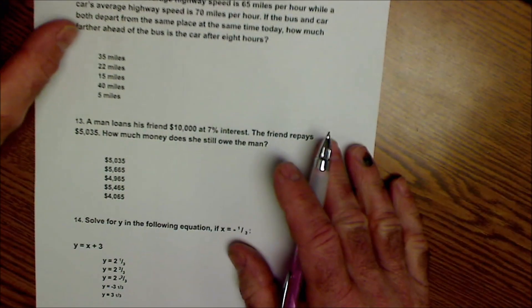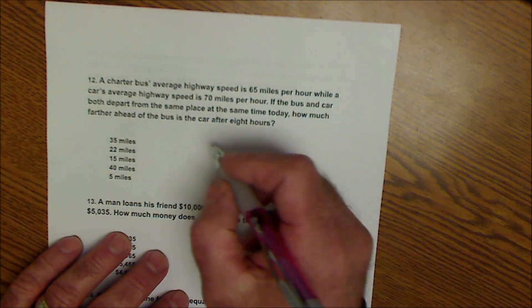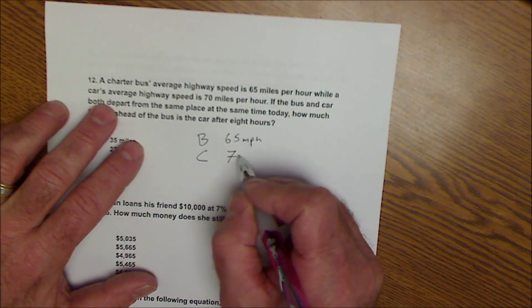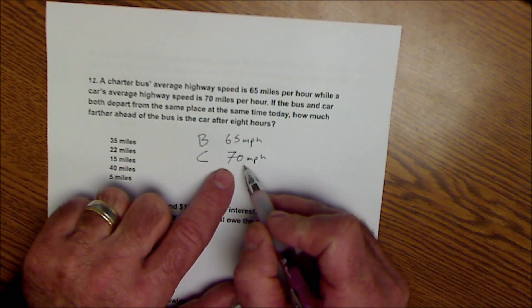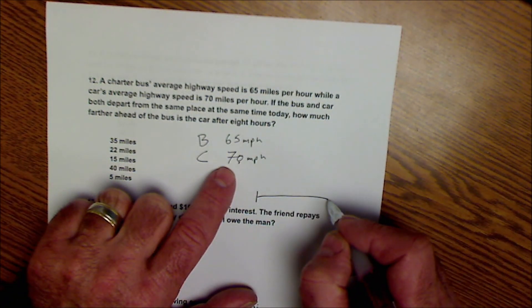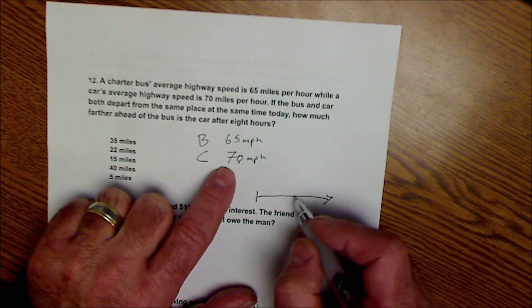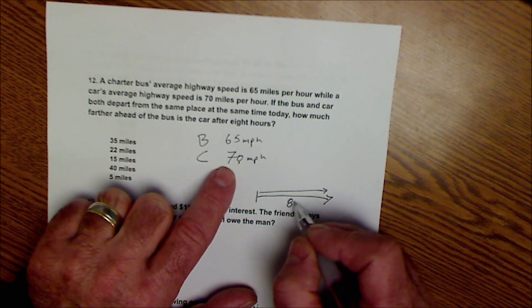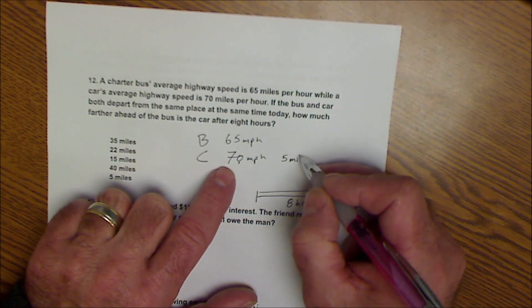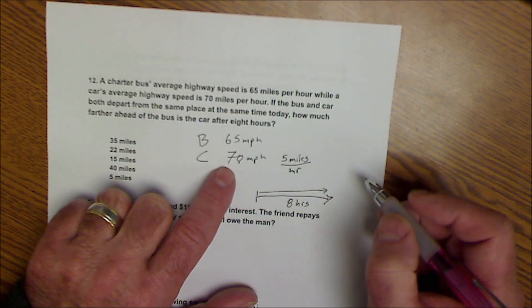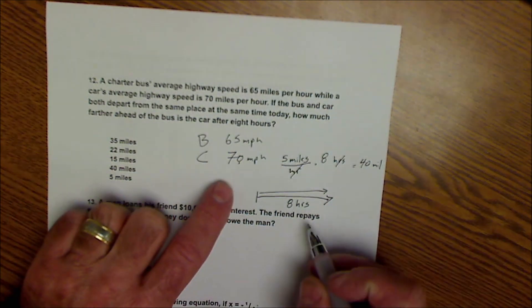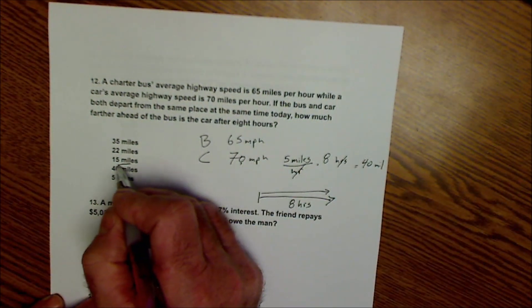All right, turning the page here to number 12. A charter bus, so I have a bus, is 65 miles per hour. While a car's average speed is 70 miles per hour. So that means every hour this car does 5 more miles. If the bus and car depart from the same place at the same time, how much further ahead is the bus after 8 hours? So they're both traveling for 8 hours. But if this car is 5 miles faster than the bus in 1 hour, then I would multiply that by the 8 hours. My hours would cancel and it would give me 40 miles. So it's a unit conversion. So my answer to 12 is 40 miles.